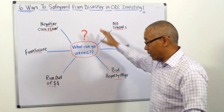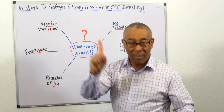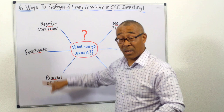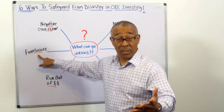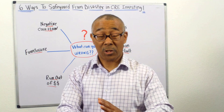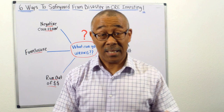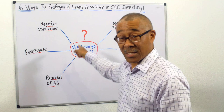Next is running out of money — the number one cause of failure when doing a renovation project on any commercial building. I'm going to give you a safeguard to make sure this doesn't happen. Lastly, the ultimate disaster: foreclosure. You do not want to go into foreclosure. To get to this point, many things have to go wrong. So I'm going to lay out the six safeguards to make sure you don't experience these disasters.